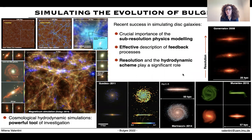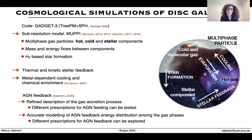This is the framework in which our effort fits. I'm going to discuss the results from a suite of cosmological hydrodynamical simulations of spiral galaxies that we carried out with the Lagrangian GADGET code. We use a sub-resolution model which describes a multi-phase interstellar medium and features several physical processes such as H2-based star formation, thermal and kinetic stellar feedback, a model for chemical evolution, and it also accounts for the presence of black holes and AGN feedback.